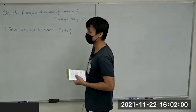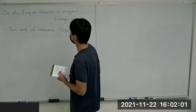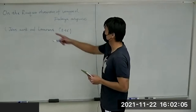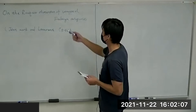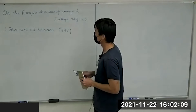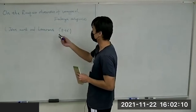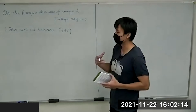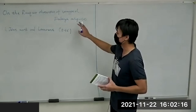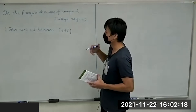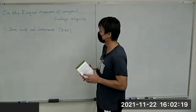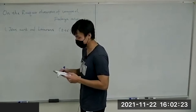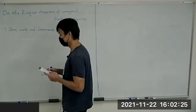Thanks for the invitation and the introduction. I'm happy to be here to give a talk. I'm going to talk about Rouquier dimension of Fukaya categories today — this is joint work with Lohan Côté from Harvard University. I'm a symplectic topologist, but this has something to do with algebraic geometry, so please stop me when you find something confused and I'll try to explain it.